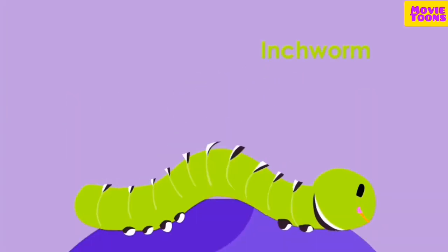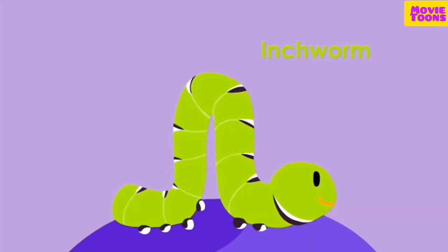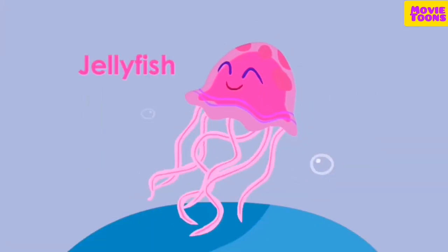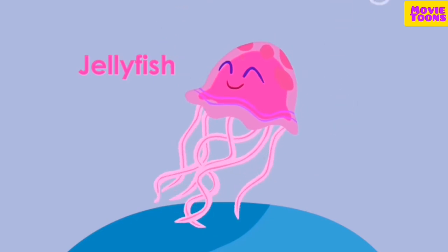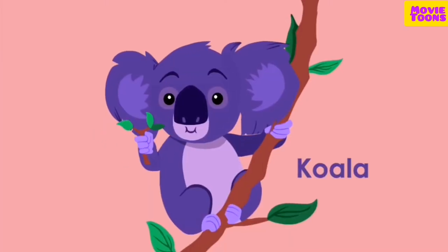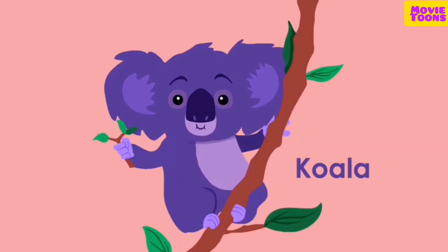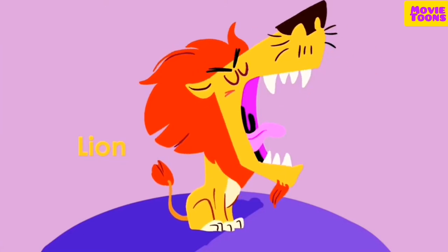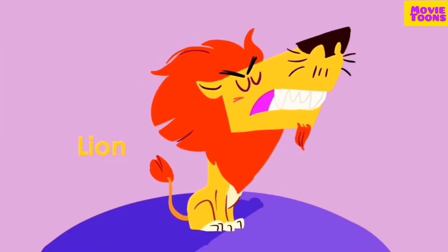I is for inchworm. I. J is for jellyfish. J. K is for koala. K. L is for lion. L.